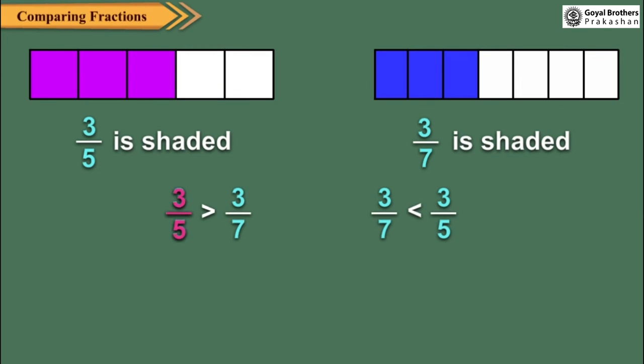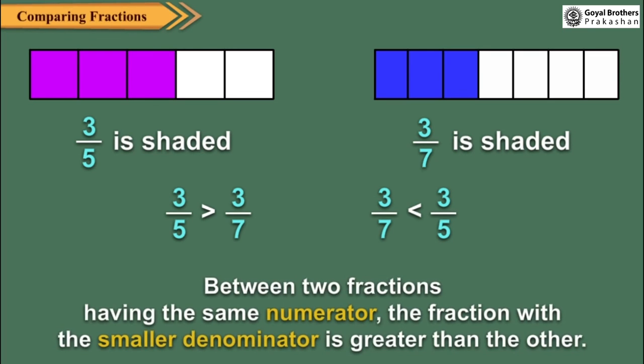Thus, 3 upon 5 is greater than 3 upon 7. Or, 3 upon 7 is less than 3 upon 5. So, we can say, between two fractions having the same numerator, the fraction with the smaller denominator is greater than the other.